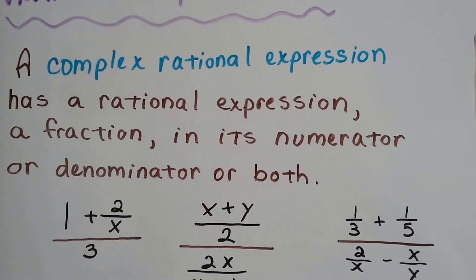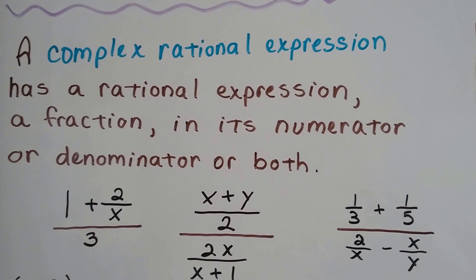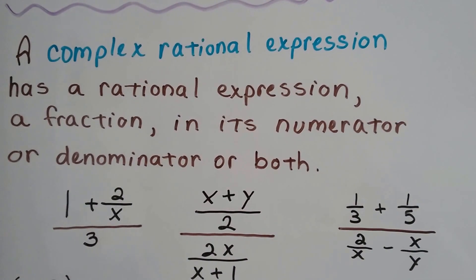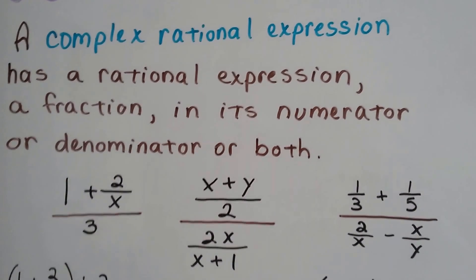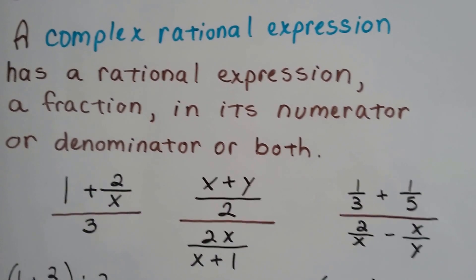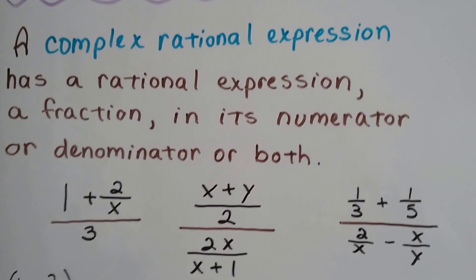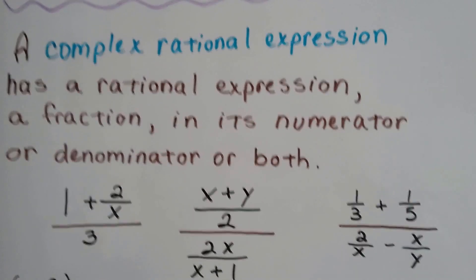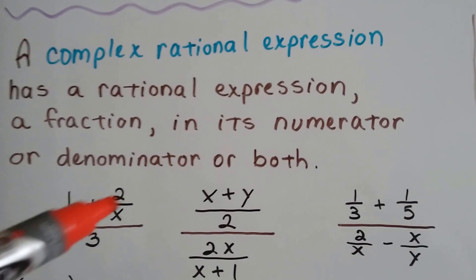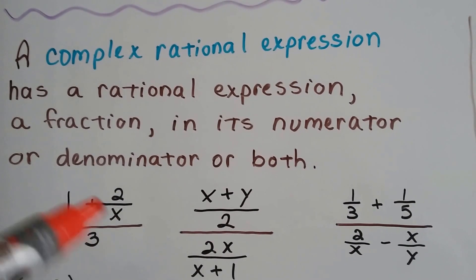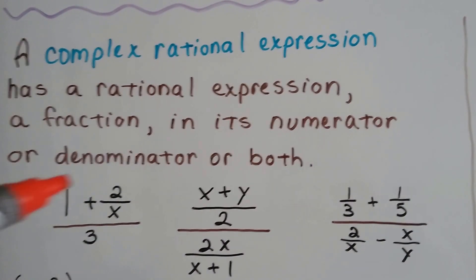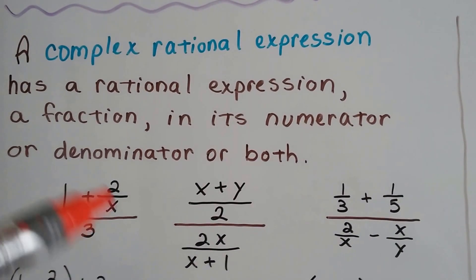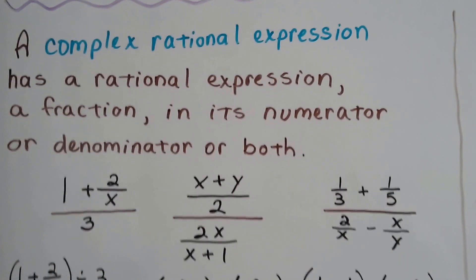A complex rational expression has a rational expression, a fraction, in its numerator, or denominator, or both. You can look at these three examples. These are all complex rational expressions. We've got a fraction in a fraction. We have a rational expression in a rational expression.